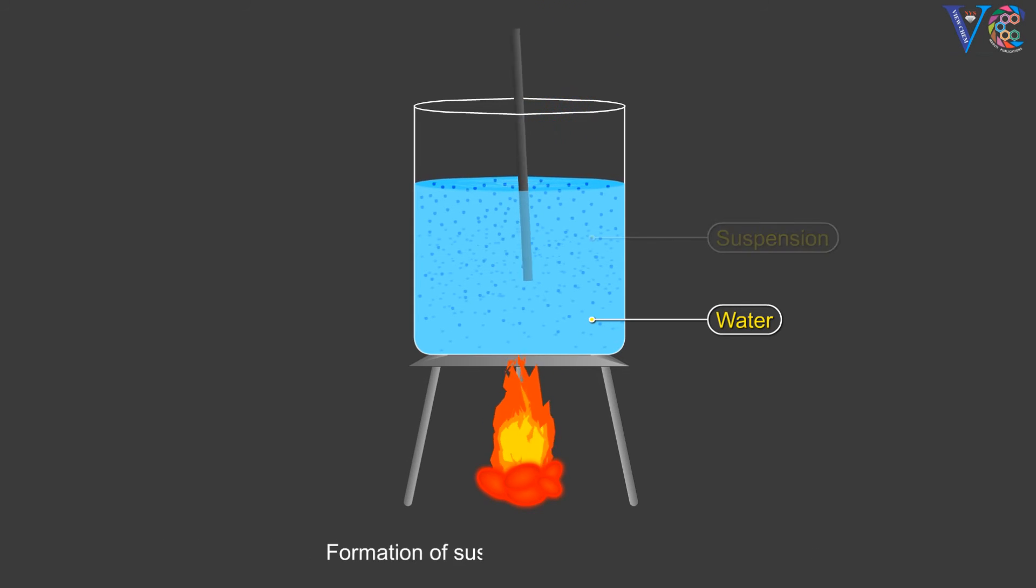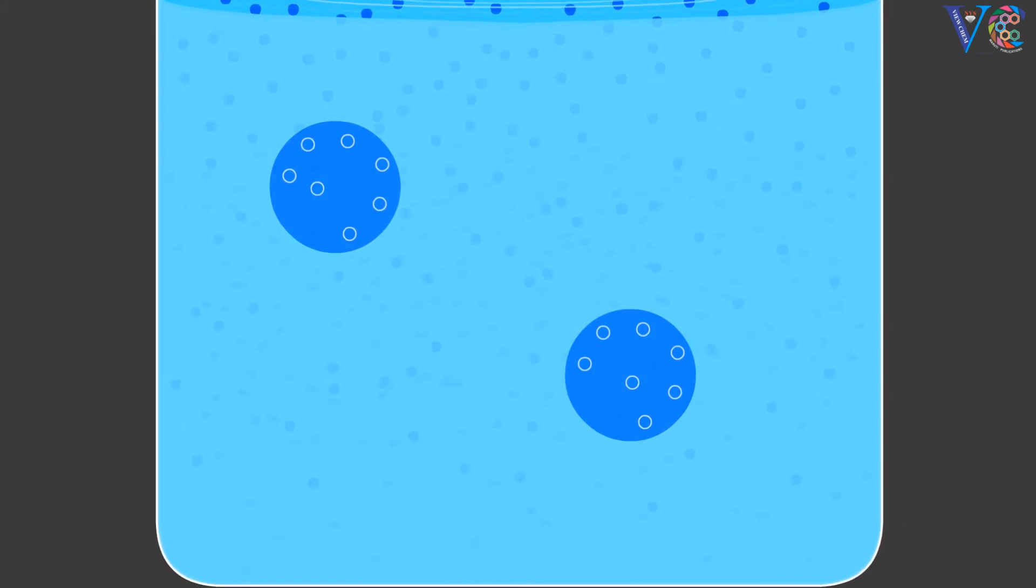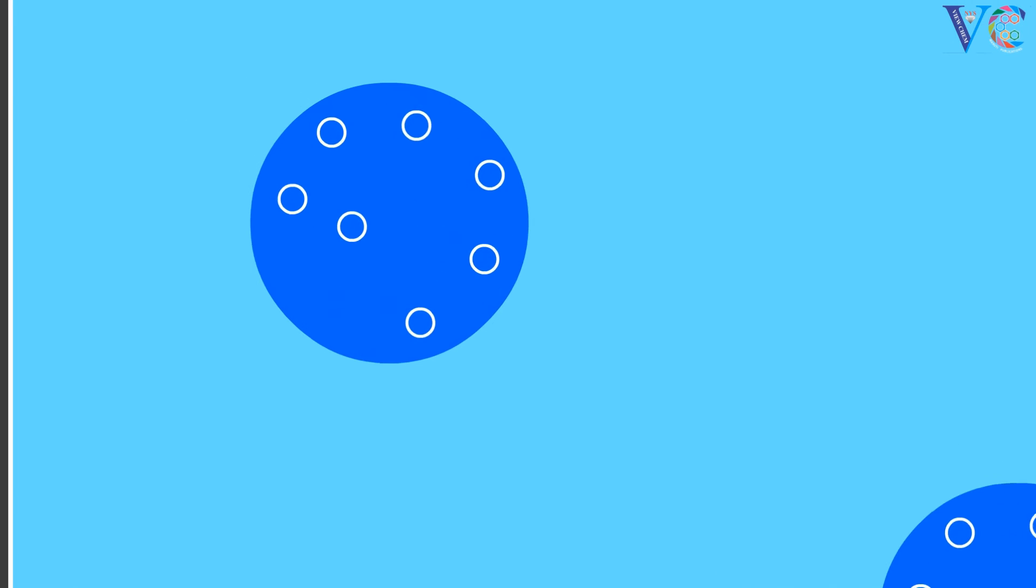Formation of suspension can be observed. At this juncture, the polymerization process starts in the monomer droplet containing monomers.